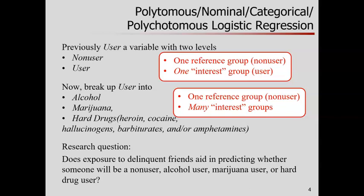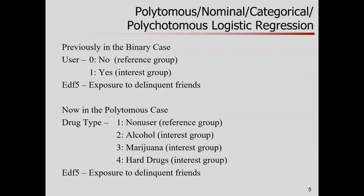In the polytomous case, we still have a reference group — non-users — but now there are several interest groups: alcohol, marijuana, and hard drugs. So our research question is not whether exposure to delinquent friends helps predict user or not (a two-category variable), but rather: non-user, alcohol user, marijuana user, or hard drug user? Previously in the dichotomous case, our outcome variable had two values. Now in the polytomous case, the outcome variable has more than two values. Everyone see the difference? This is key.